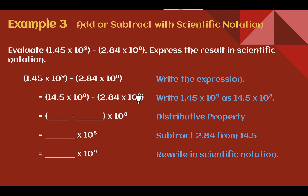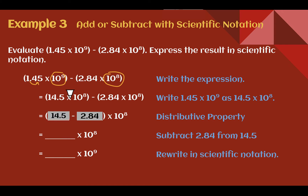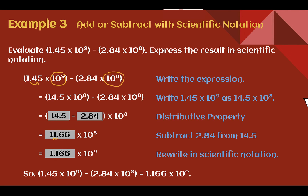Example 3: Add or subtract with scientific notation. Evaluate 1.45 times 10 to the 9th minus 2.84 times 10 to the 8th. Express the result in scientific notation. The powers are not the same, so convert 10 to the 9th into 10 to the 8th. Subtracting one from the exponent means dividing by 10, so multiply the coefficient by 10 — moving one place to the right — giving 14.5. So we have 14.5 times 10 to the 8th minus 2.84 times 10 to the 8th. Factor out 10 to the 8th using the distributive property: 14.5 minus 2.84 equals 11.66. This is not in proper scientific notation, so move the decimal one place left and add 1 to the exponent: 1.166 times 10 to the 9th.